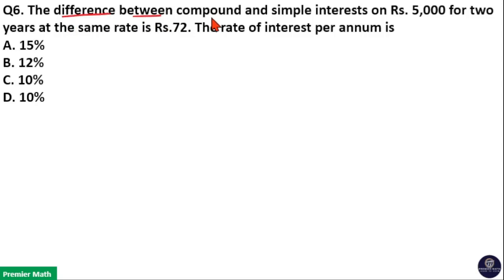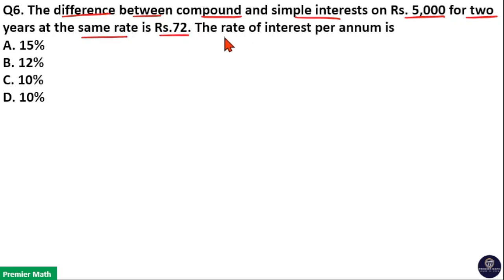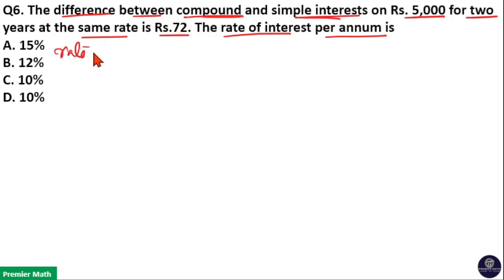The difference between compound and simple interest on Rs. 5000 for 2 years at the same rate is Rs. 72. The rate of interest per annum is to be found. Here the rate is common for both compound and simple interest. Let us consider the rate as R percentage.